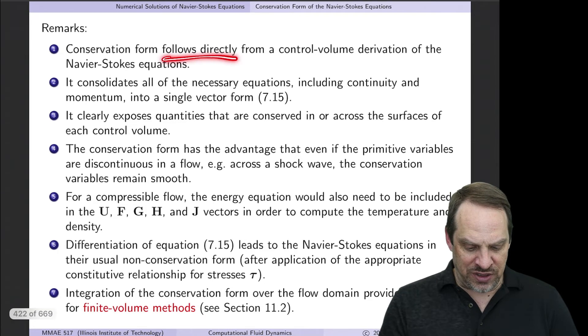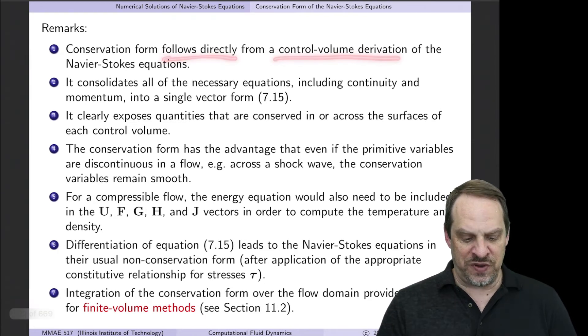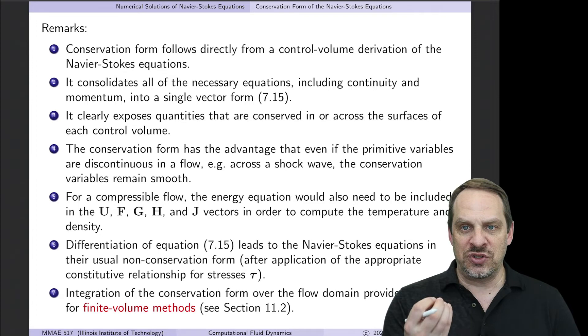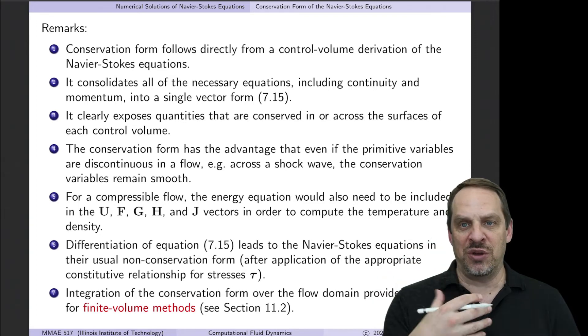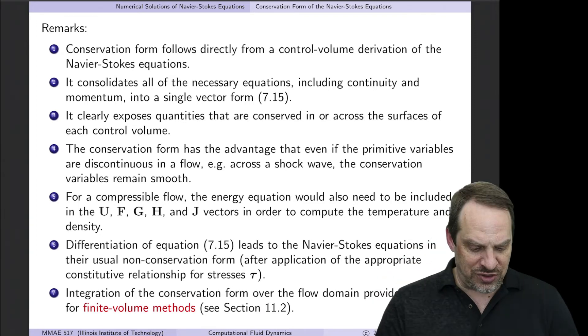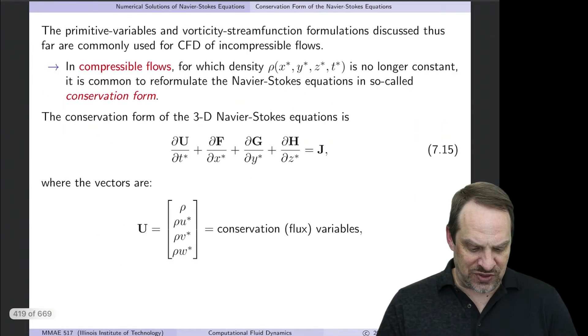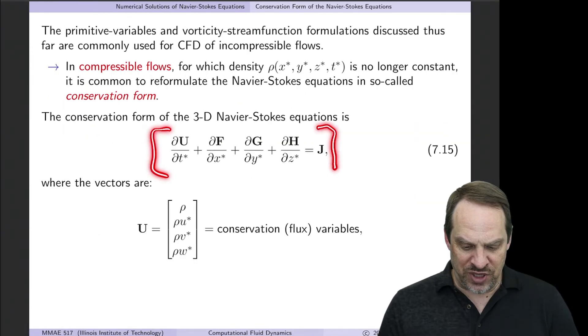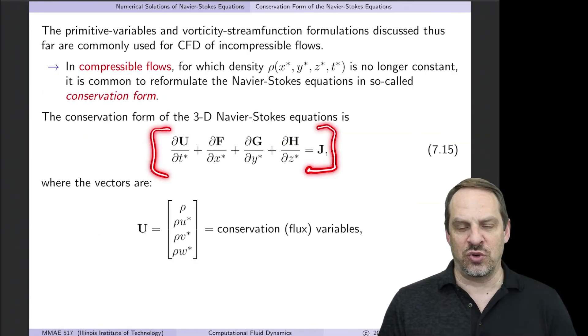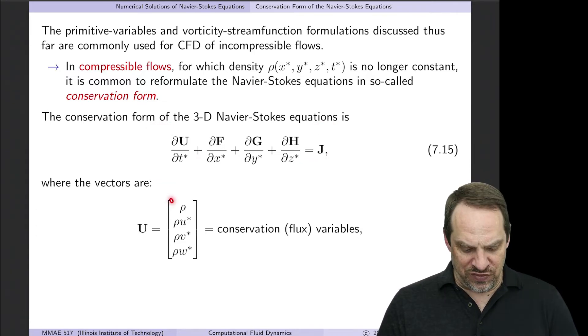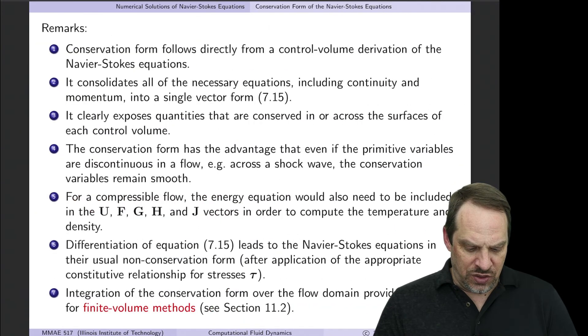So it follows directly from a control volume derivation of Navier-Stokes. Navier-Stokes is F = ma applied to a control volume. You'll notice one of the nice things is it actually consolidates all of your equations into this one vector form. So even continuity is incorporated into this one equation with all of the variables included in those vectors.